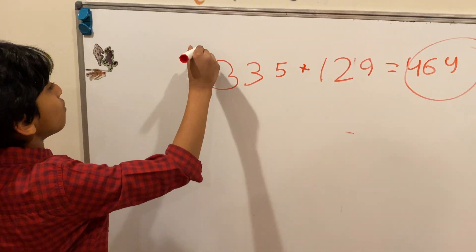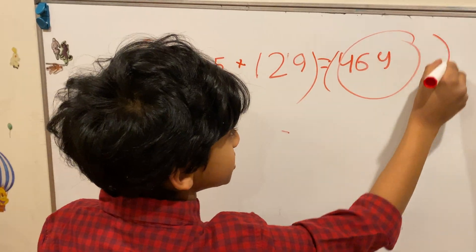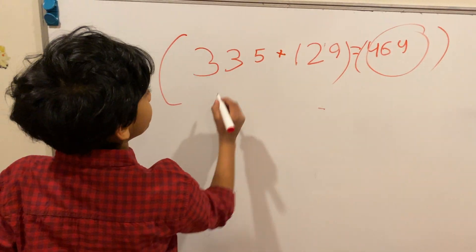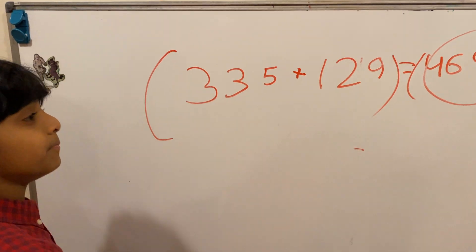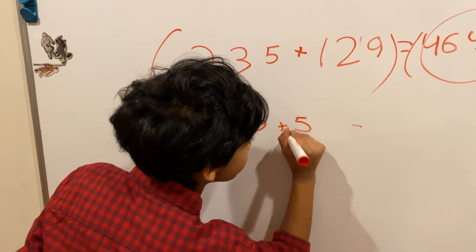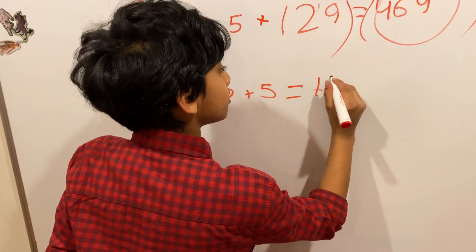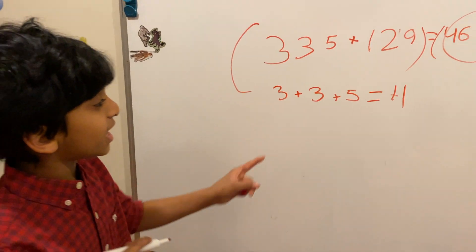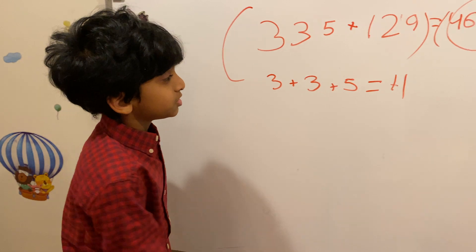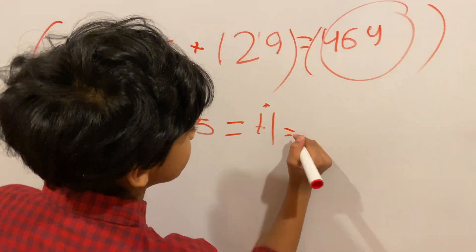So this is the left hand side and this is the right hand side. Let's look at the first part of the left hand side: 3 plus 3 plus 5, which equals 11. Now we have 11, so let's make this into a single digit number. We do 1 plus 1 which equals 2.